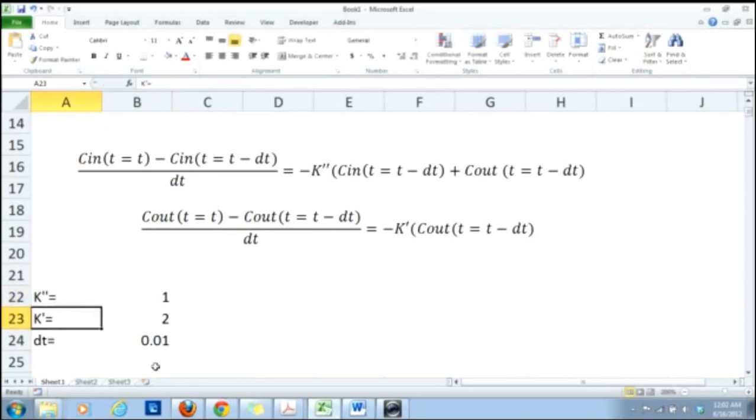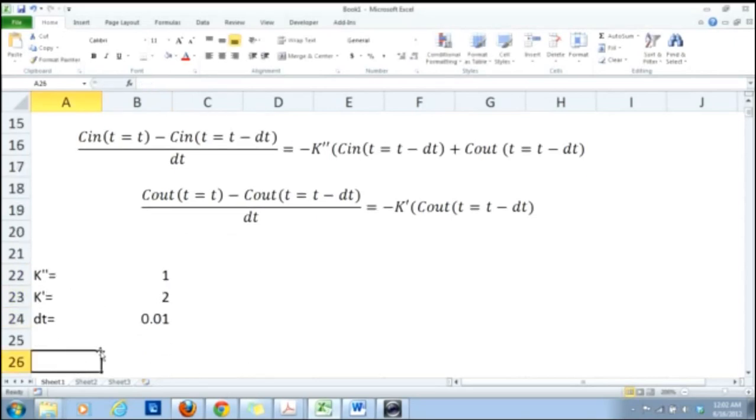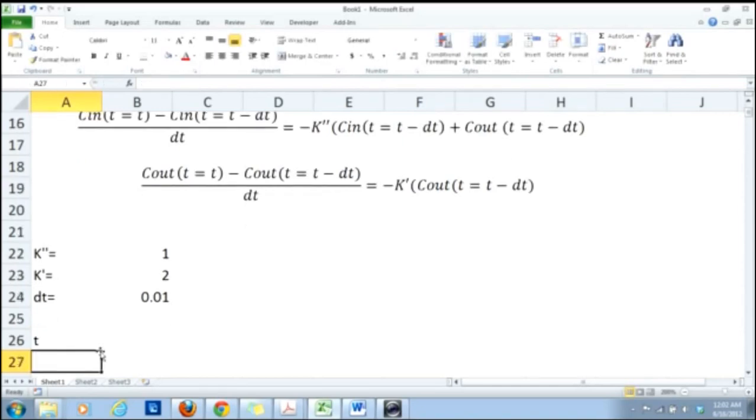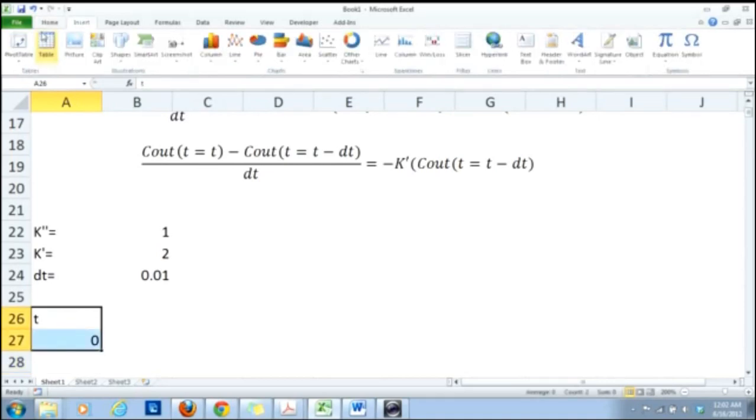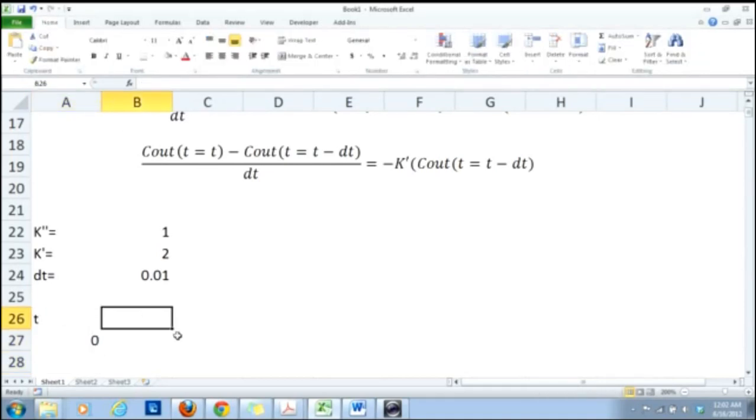Now what I'll do is I'll first define t. So t is equal to 0 in the beginning. So at t=0, t is 0.01. And then let's define C_in and then C_out. So let me center them.